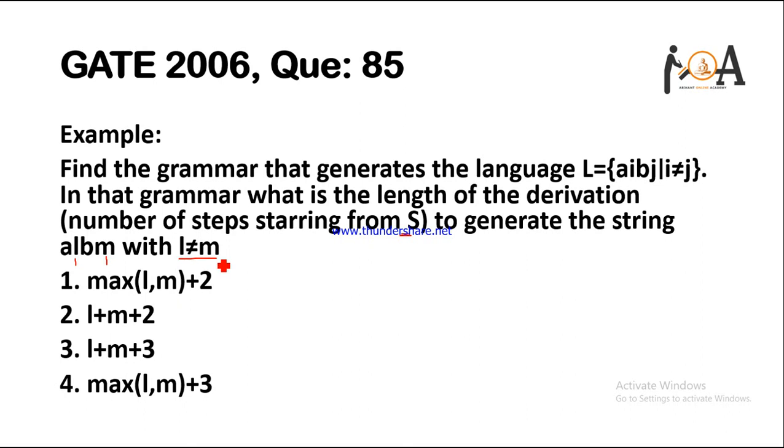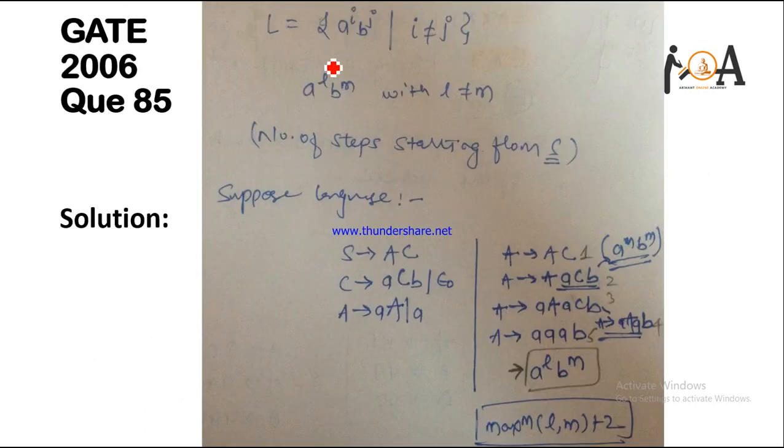To solve this question we have to make a grammar which matches this language. Suppose the given condition is L equals A to the power I, B to the power J, where I doesn't equal J. We have to find the grammar and the number of steps in the length of derivation so that A to the power L and B to the power M will be there, where L doesn't equal M.